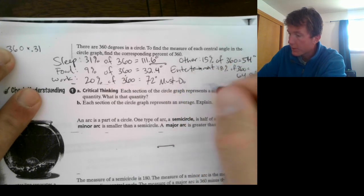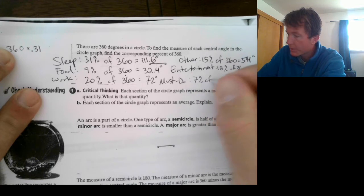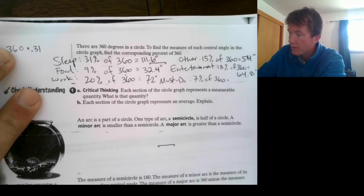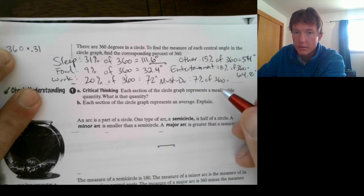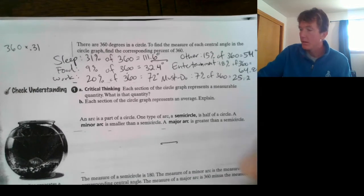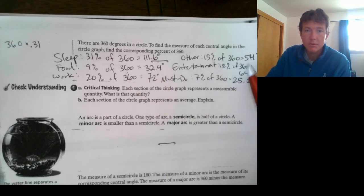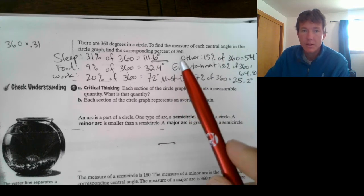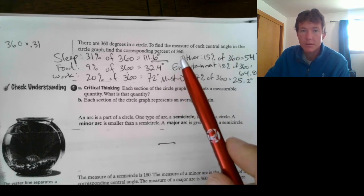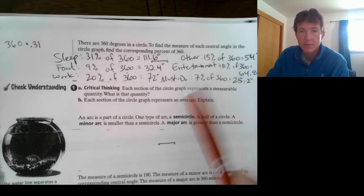And then, must do was 7%. That's 7% of 360. So, you plug that into the calculator. 360 times 0.07. 25.2. Okay. Now, if you took all these numbers and you add them up, you'd get 360 degrees. Which is how many degrees are in a circle. Just like if I took up all these percentages and added these up, that would be 100%.